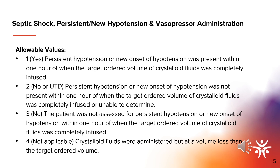Value three — no, the patient was not assessed for persistent hypotension or new onset of hypotension within one hour of when the target ordered volume of crystalloid fluids was completely infused. And value four — not applicable: crystalloid fluids were administered, but at a volume less than the target ordered volume.